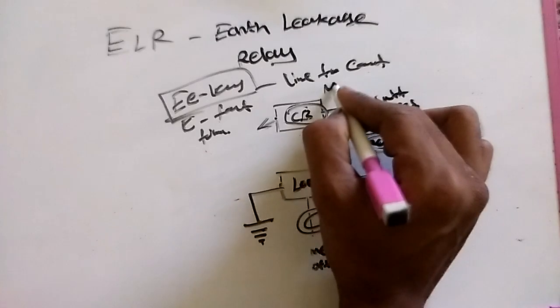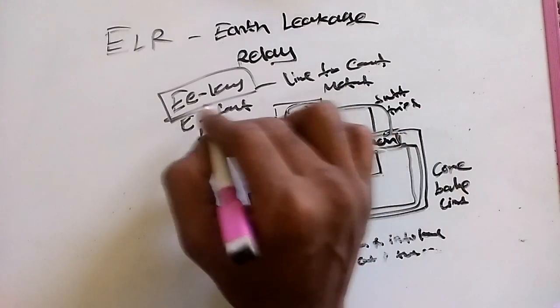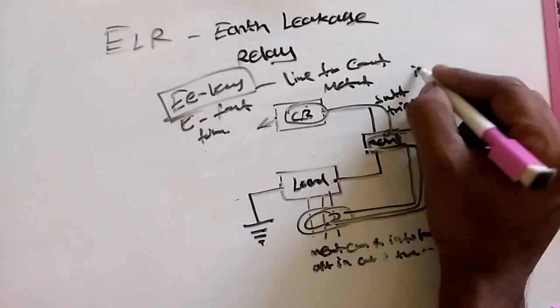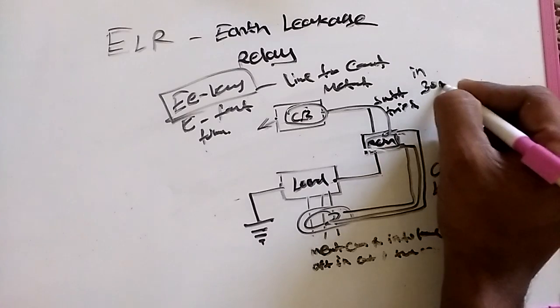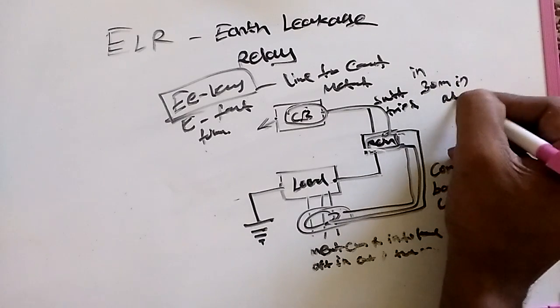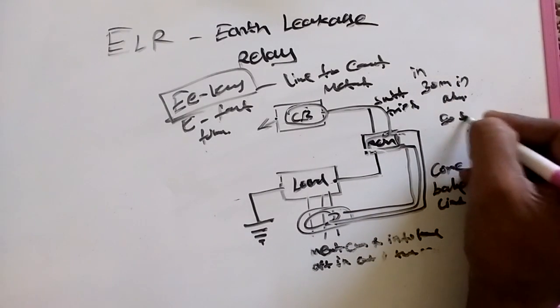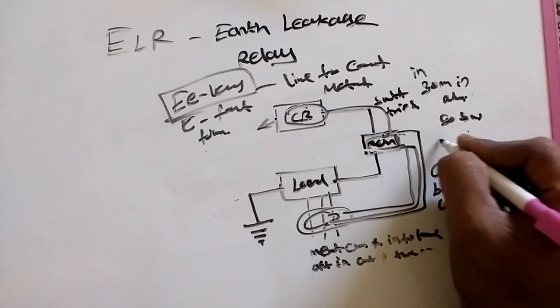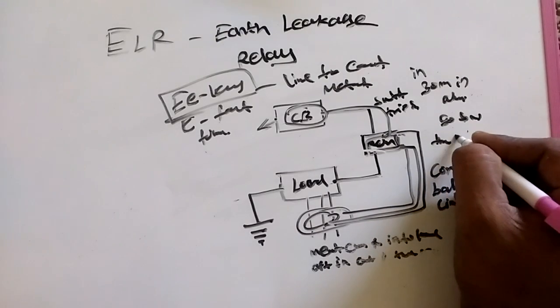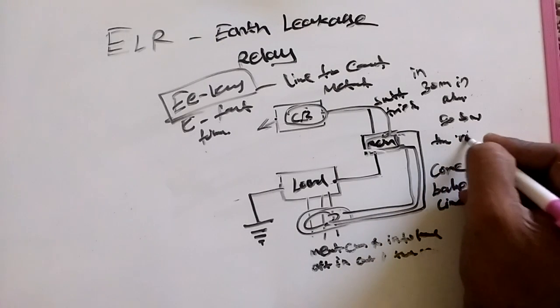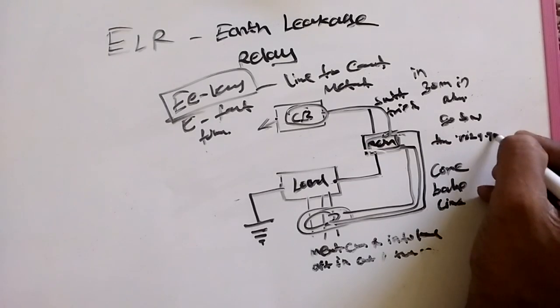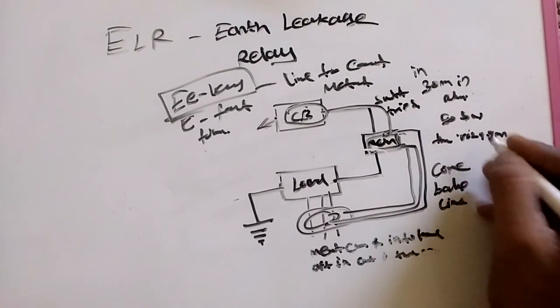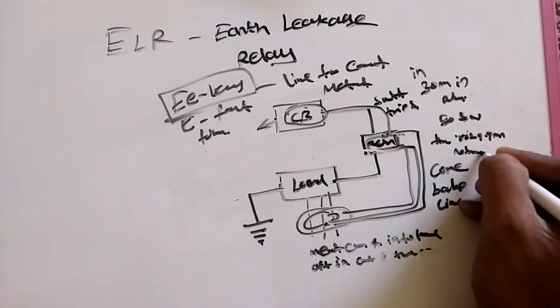If you have 30 milliampere or above current, it's going to affect the human body. Below 29.9 milliampere does not have any effect on the human body.